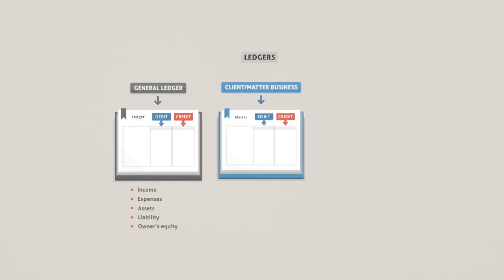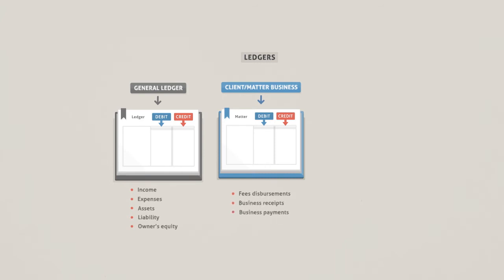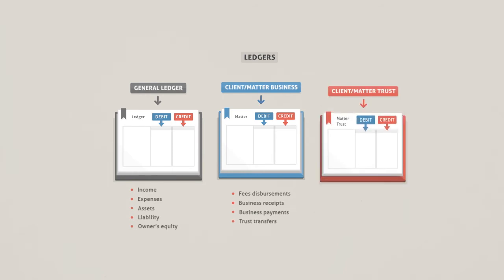Client or matter business ledger for fees, disbursements, business receipts, business payments and trust transfers. And the client matter trust ledger for trust receipts, trust payments on behalf of the client and trust transfers.